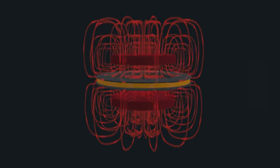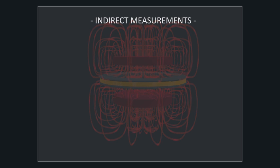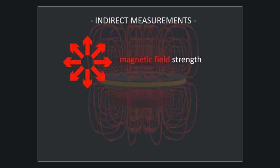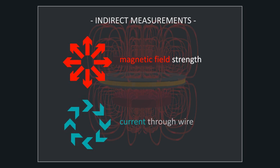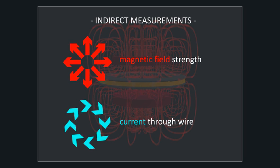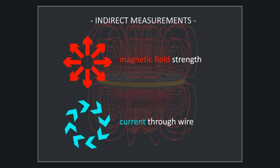The watt balance lets researchers determine the mass of an object indirectly by determining two quantities: the strength of the magnetic field and the current running through the coil of wire. It does this in two separate measuring modes.